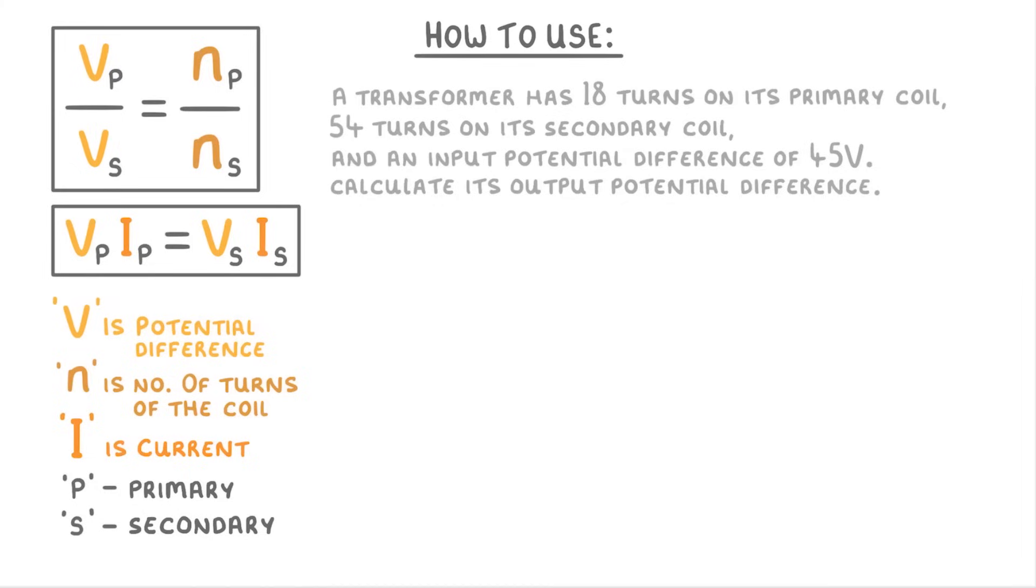Here we know that np, which is the number of turns across the primary coil, is 18, ns is 54, and Vp is 45. We're looking for the output potential difference, so Vs, which we could put as a question mark. If you look at our two equations, you can tell that you're going to have to use this first one because we don't have any current values.